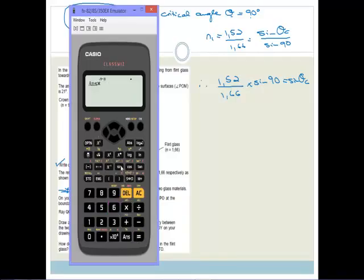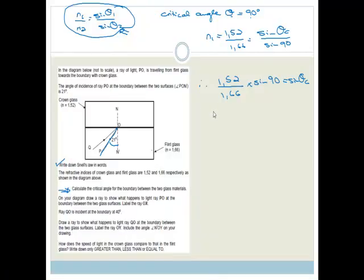That gives you 0.9156. But I'm not going to round off. I'm now just going to second function sine the answer to get my critical angle. You can see the angle is 66.3. So theta C, the critical angle, is 66.30 degrees.